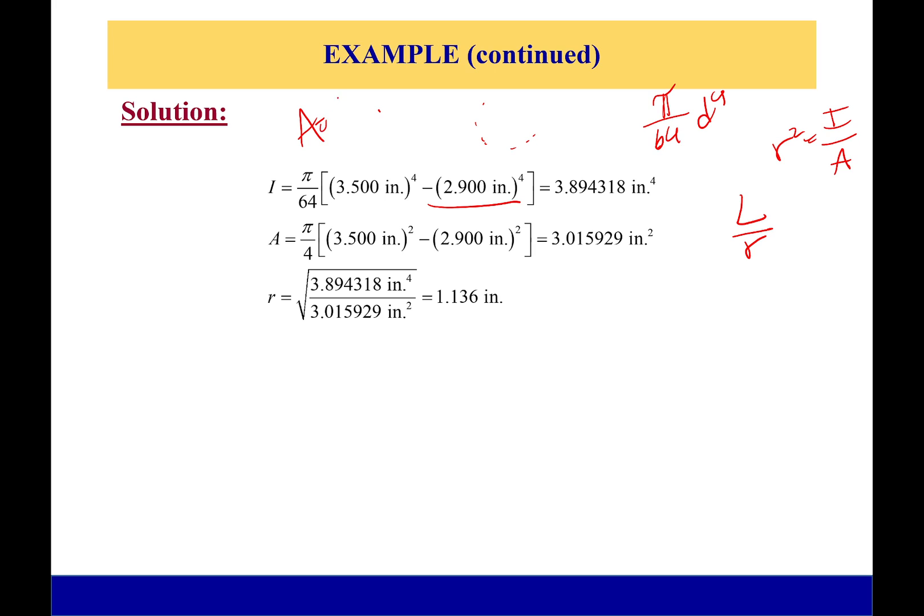So area: we're once again just using a simple equation. Area of a circle is equal to π/4 times the diameter squared. And since we're hollow, we have the outer circle right here and we're subtracting out the inner circle.